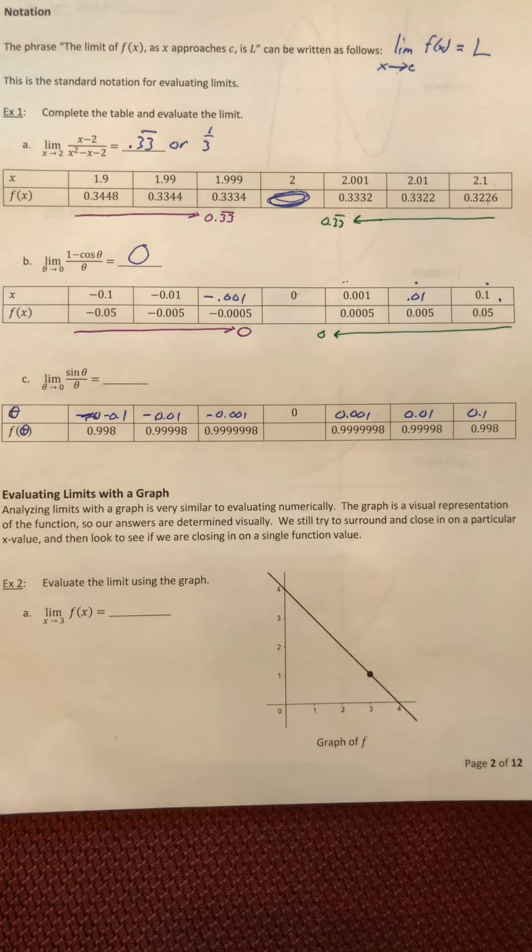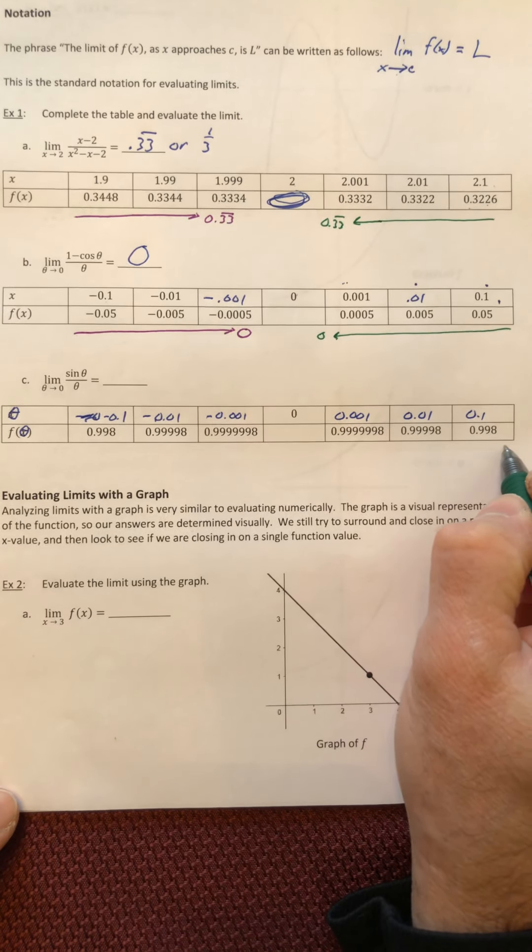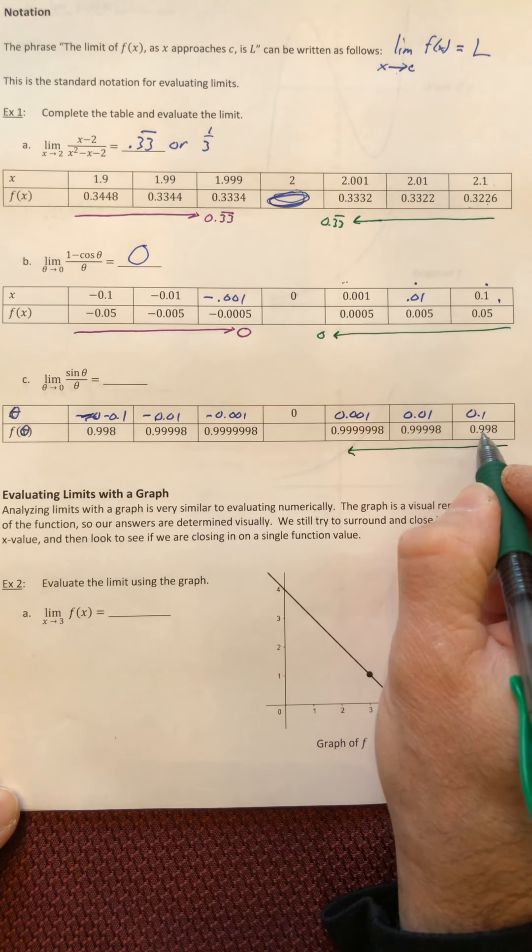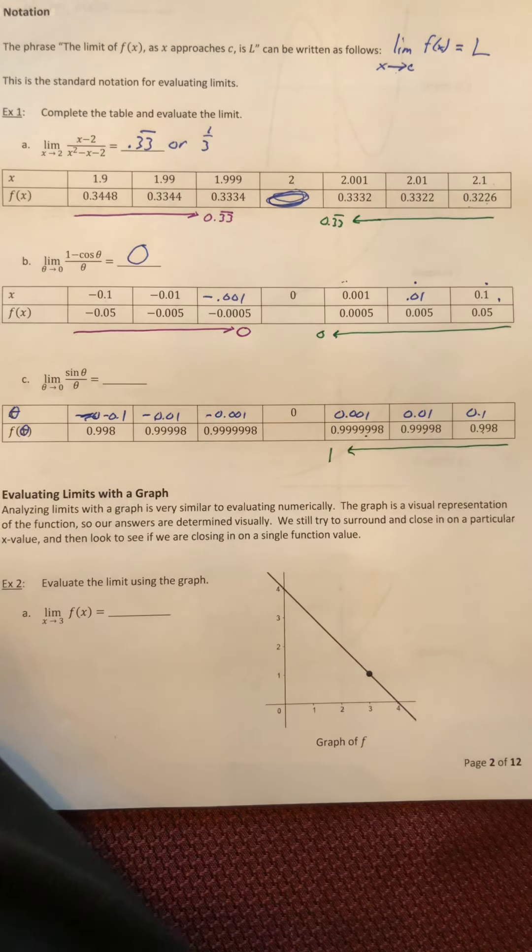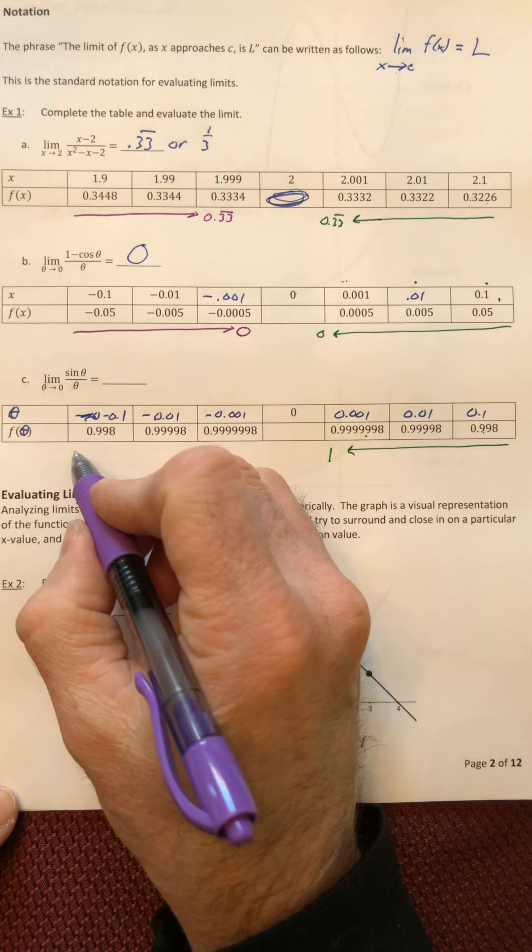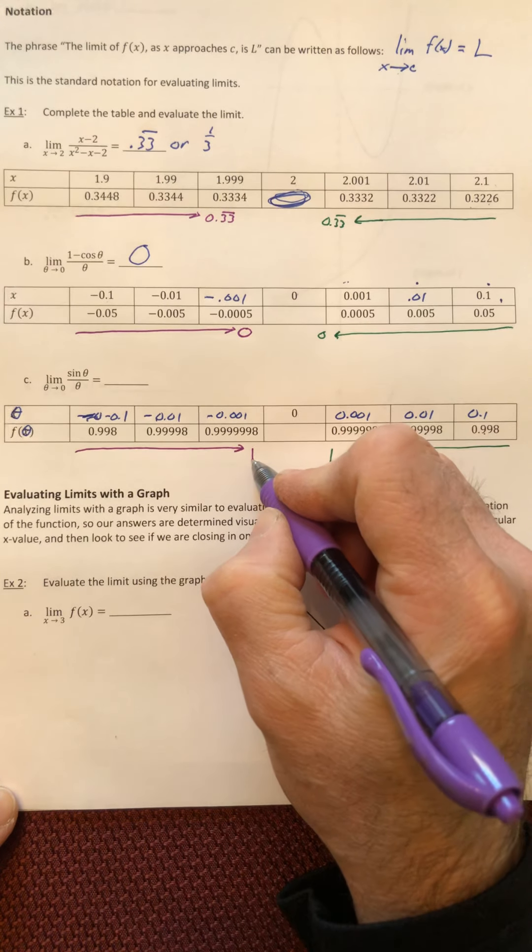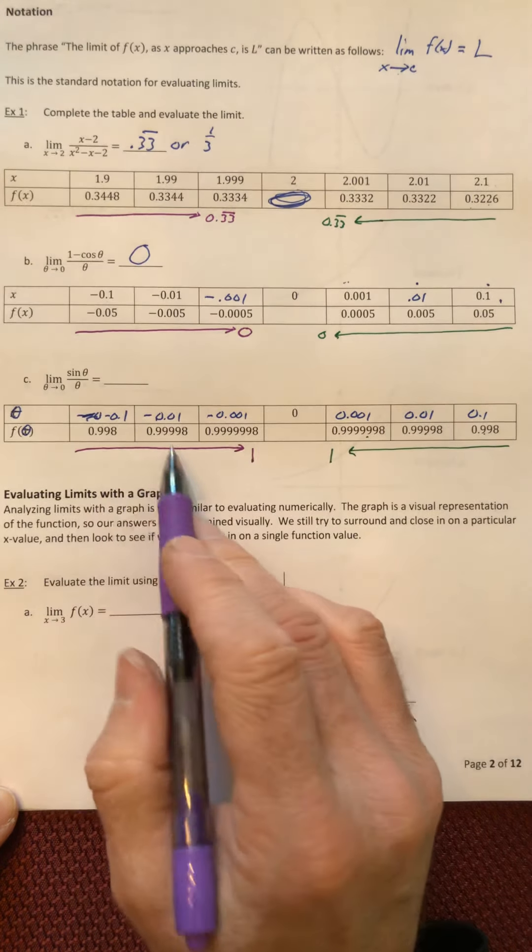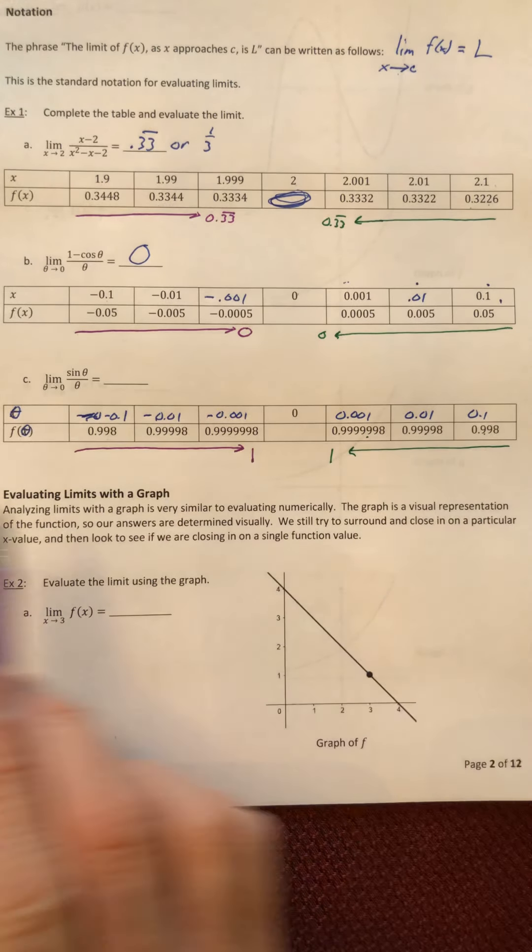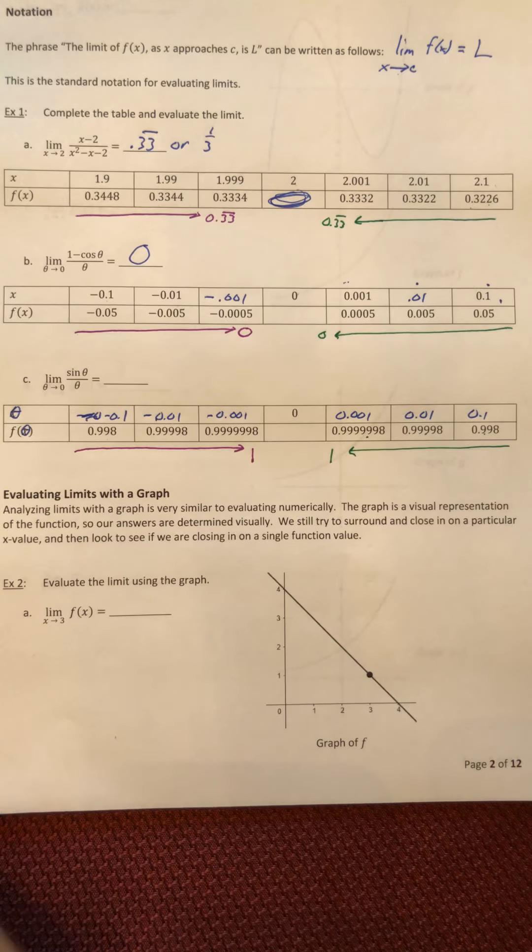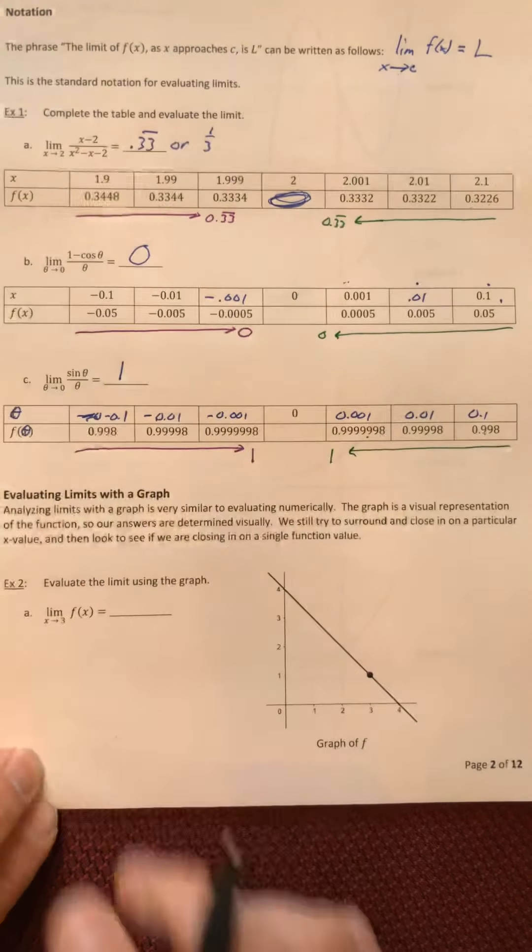Okay, so as you approached zero from the right, these numbers look like they're getting closer and closer to one. And same thing on this side here: there's 0.99, 0.999999, so they keep adding in some nines, and that's going to work its way closer and closer and closer to one.